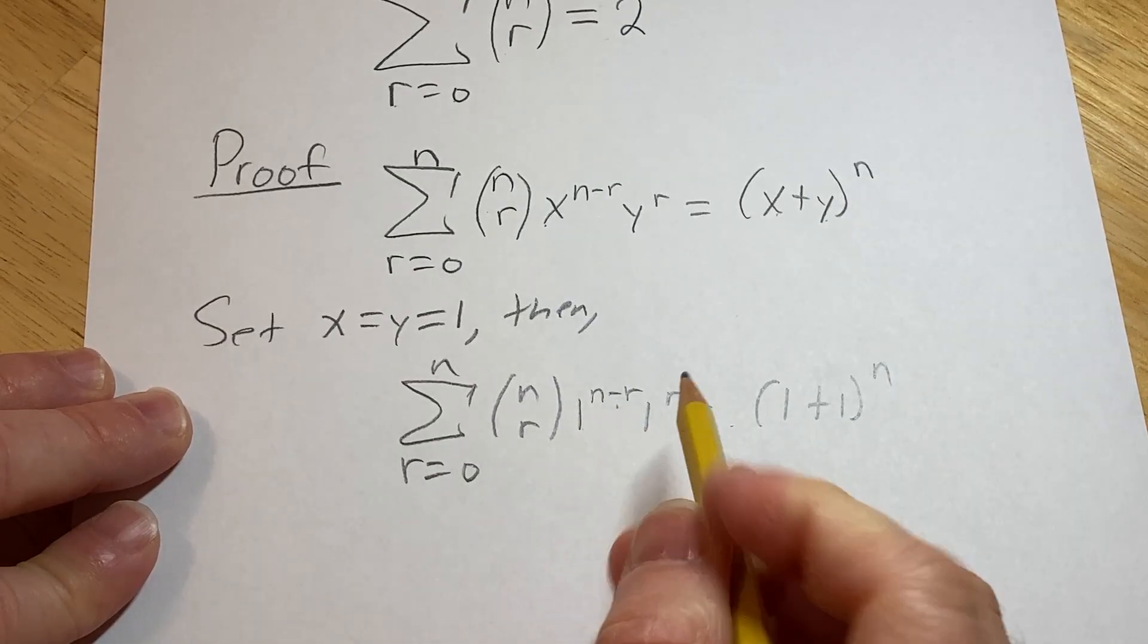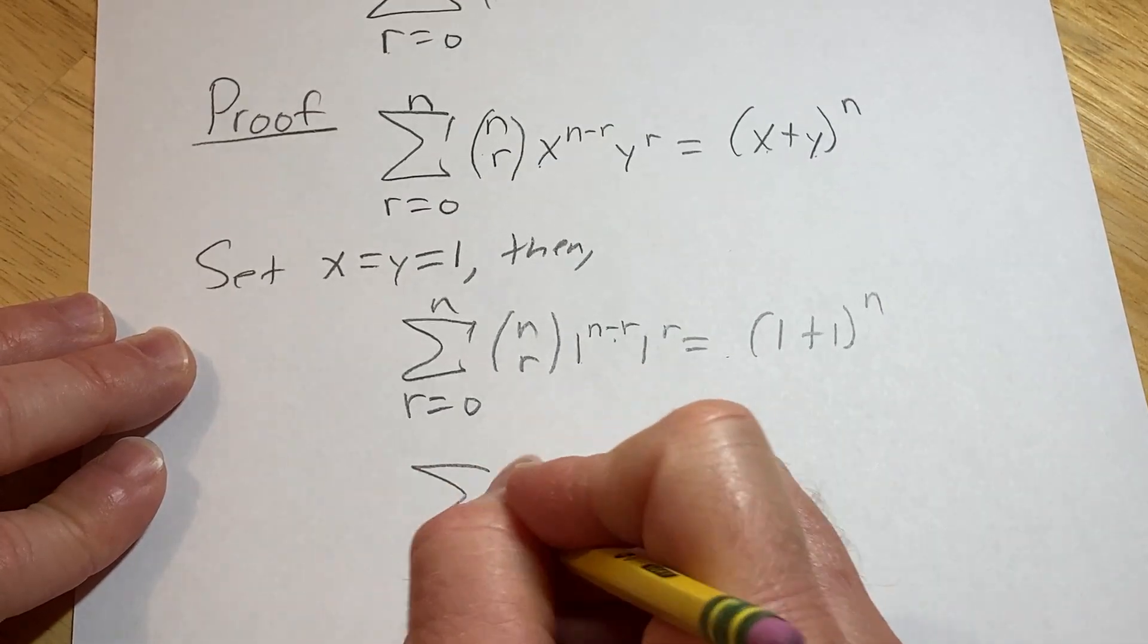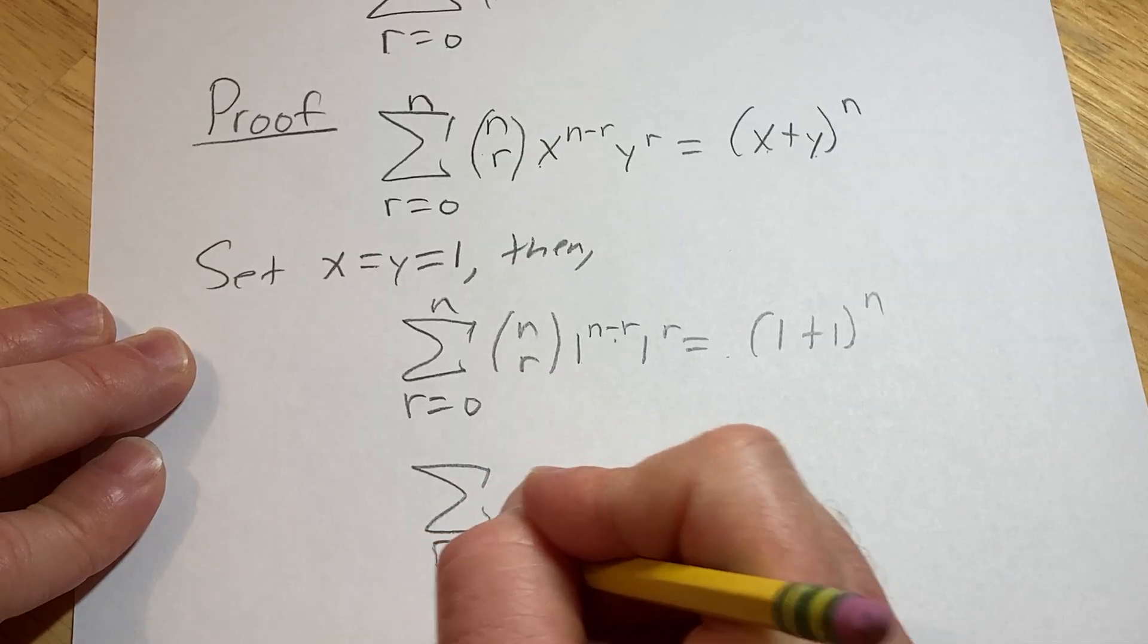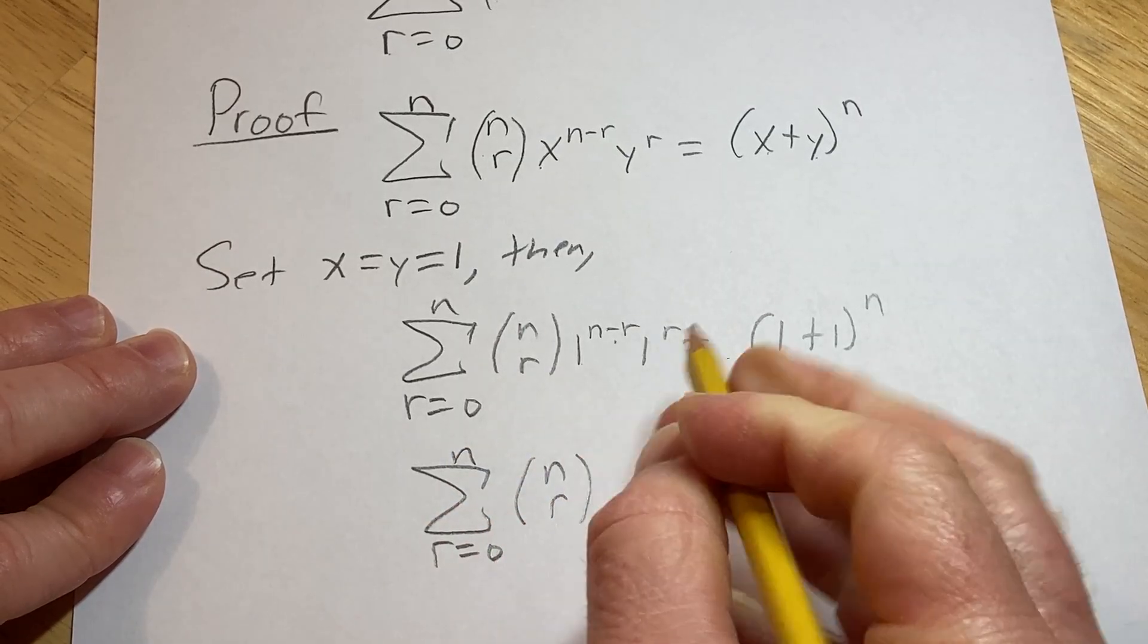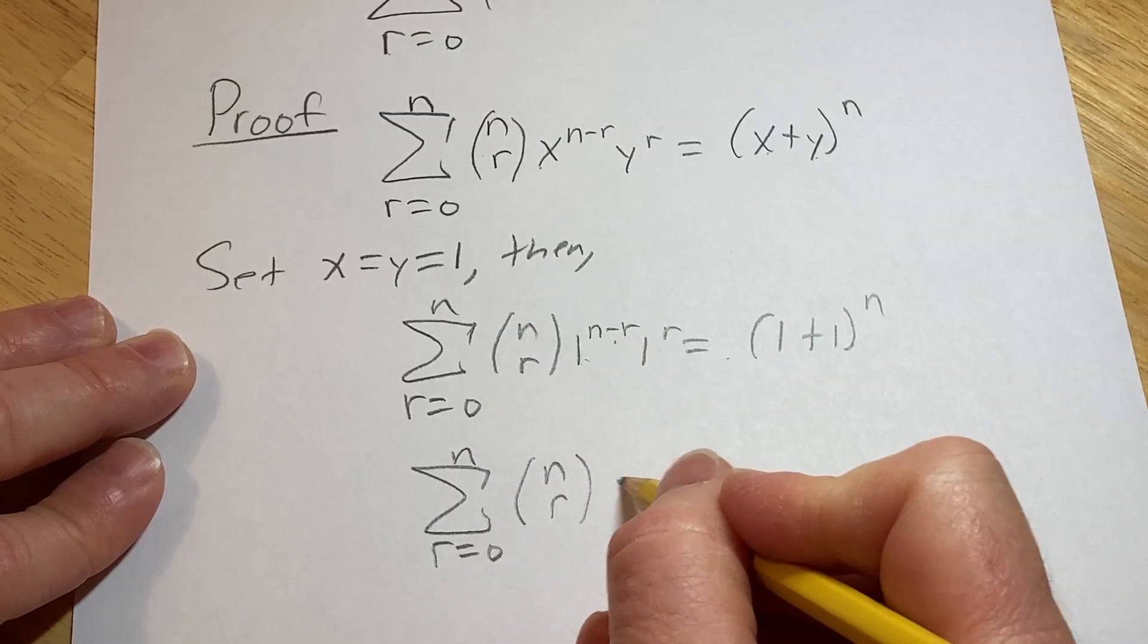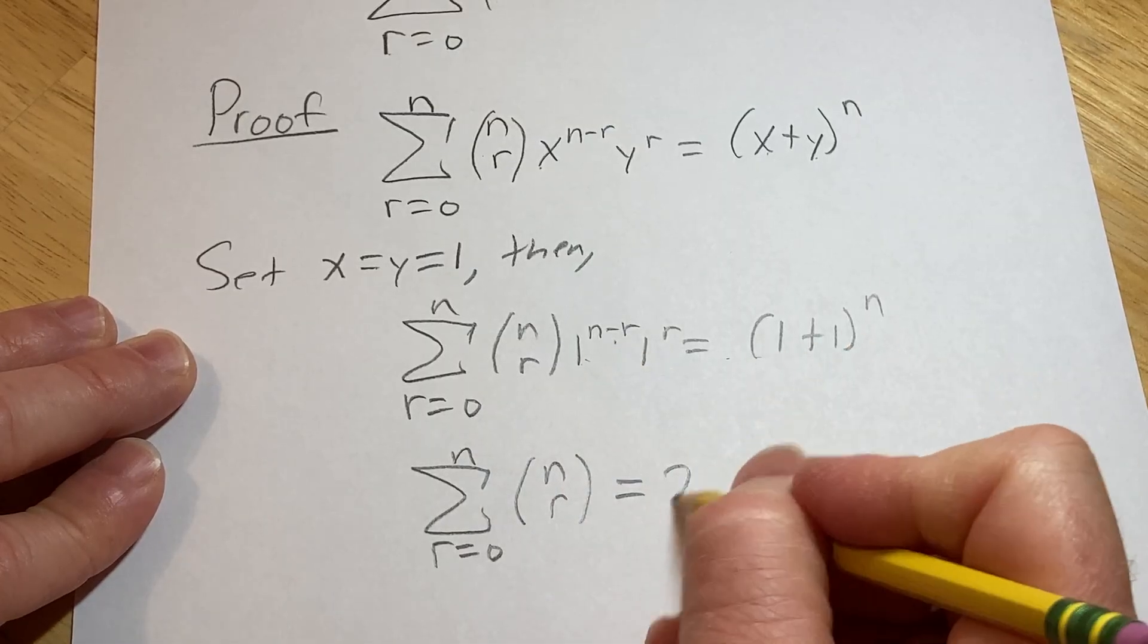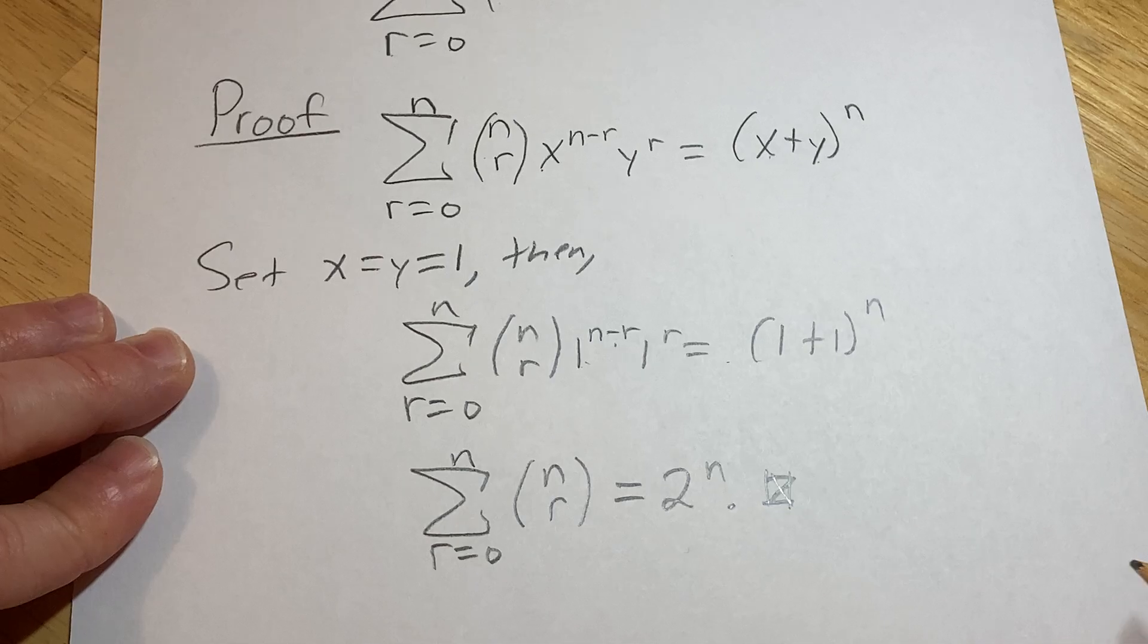But 1 to any power is 1, so this is going to be the finite sum as r runs from 0 to n of n choose r, and this is just 1 so it goes away, and 1 plus 1 is 2. And that proves the result.